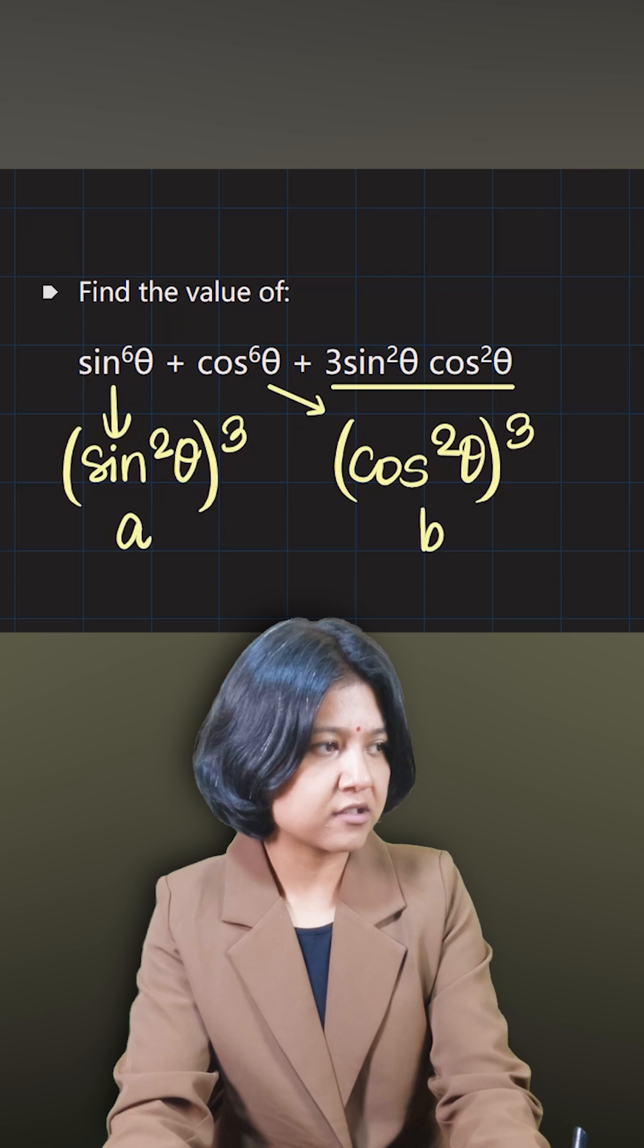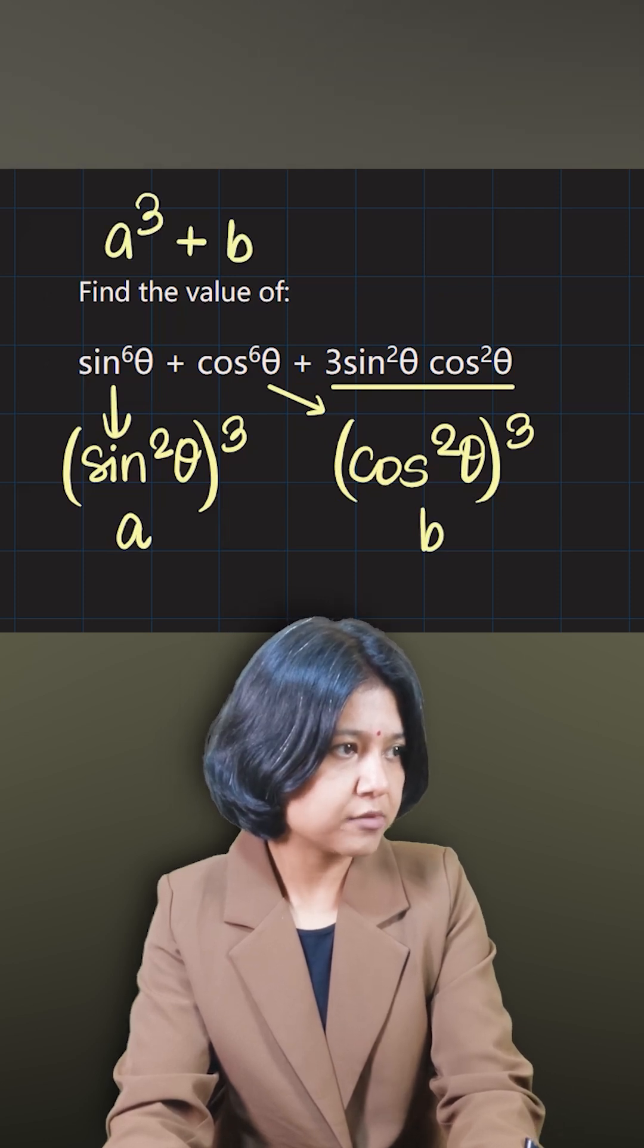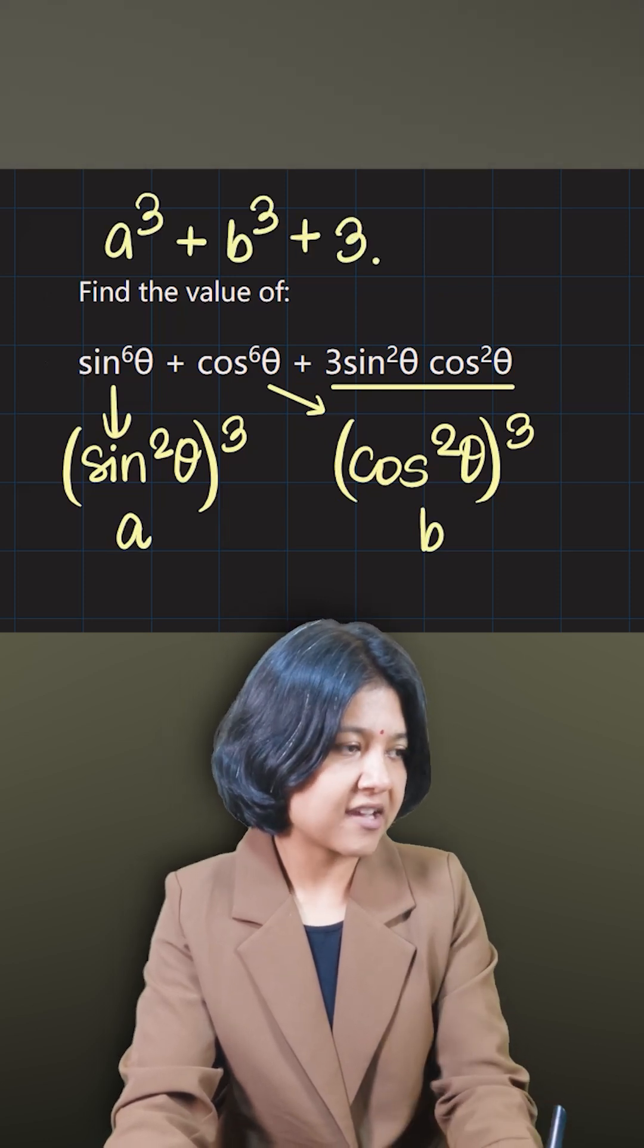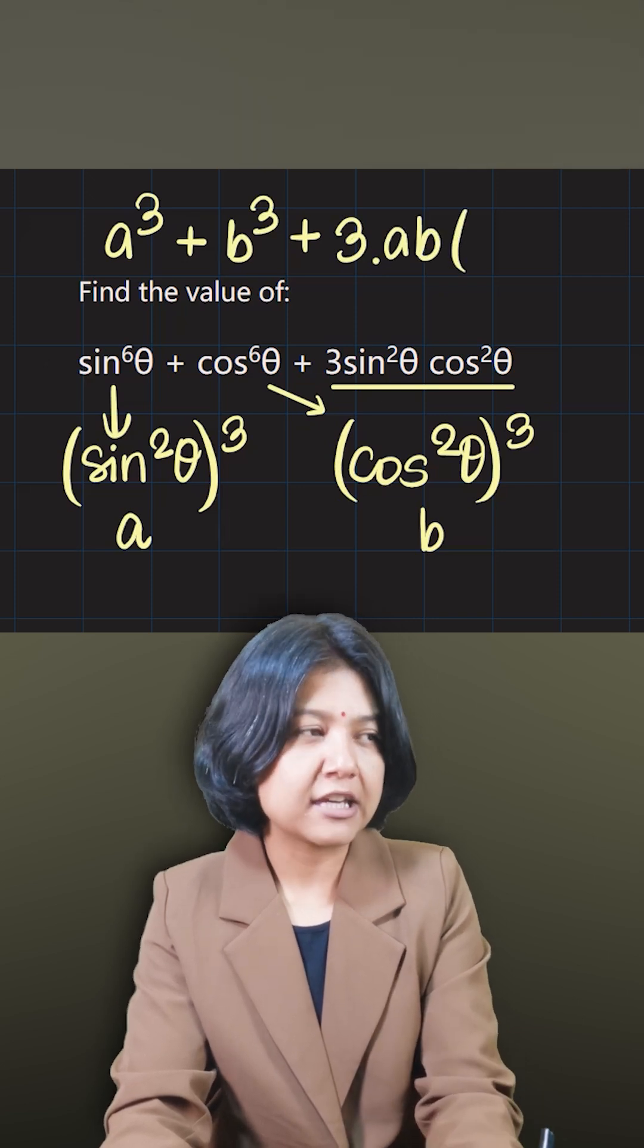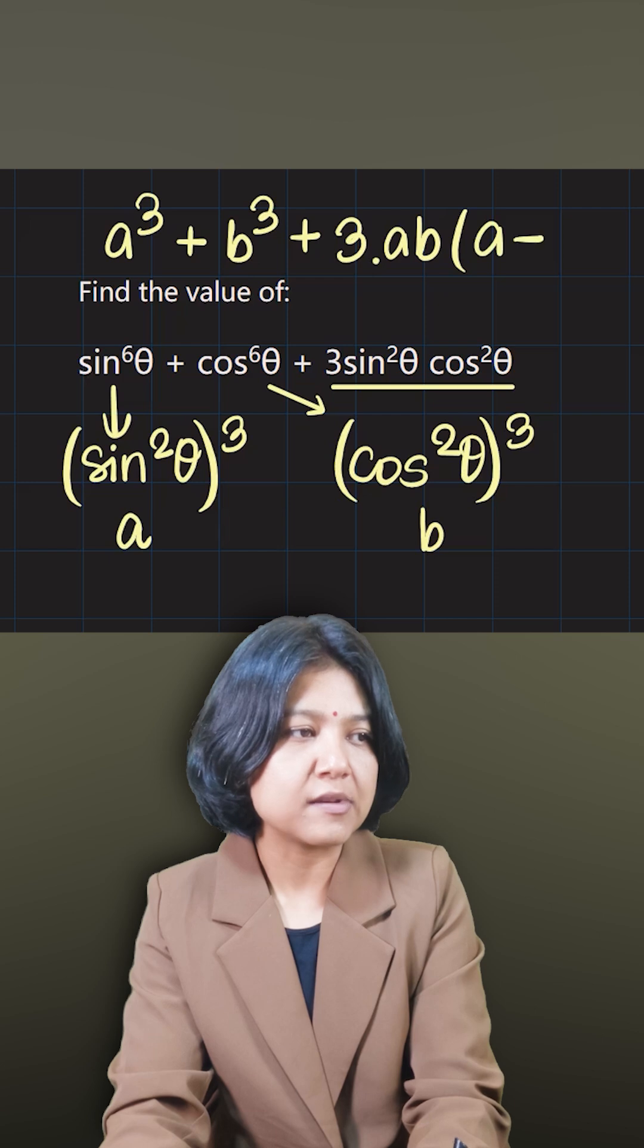then what we have is we are simply doing a cubed plus b cubed plus 3 times sine squared theta is a, so 3ab. There is one formula, a cubed plus b cubed plus 3ab times a plus b.